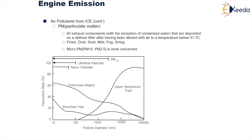Then we have particulate matter. Particulate matter simply means very fine particles that are given out in the exhaust emissions. All exhaust components deposited on a defined filter after having been diluted with air to a temperature below 52 degrees Celsius are included — this covers fines, dust, soot particles, mist, fog, and smog. Three main health issues are caused by particulate matter. Depending on their size, they affect the bronchial tree in the lungs, the pulmonary region, and the upper respiratory tract. These particulate matters are very harmful for people suffering from wheezing, asthma, or breathlessness.